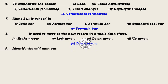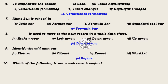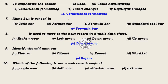Question 9: Identify the odd man out. Options: Picture, Clip art, Report, Word art. Among the options, Report is the one that doesn't belong with the others. Answer: Report. Question 10: Which of the following is not a web search engine? Options: Google.com, Dell.com, Altavista.com, Ask.com. Answer: Dell.com. All others are search engines.